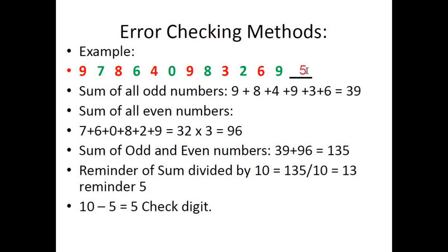The answer 5 is written in the blank. Sometimes the examiner gives a blank and asks you to calculate the check digit; sometimes it gives you a complete number and asks you to confirm whether the check digit is correct. You go through the same method and see if your answer matches the digit at the rightmost position.